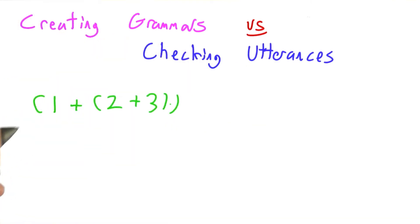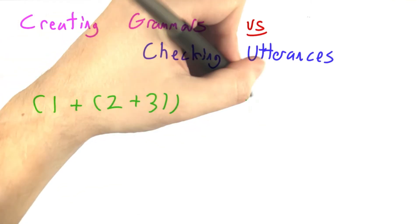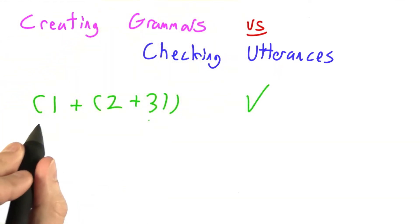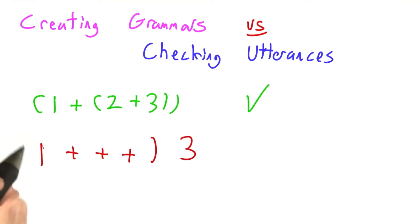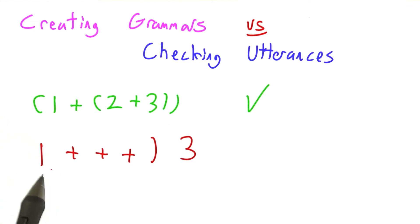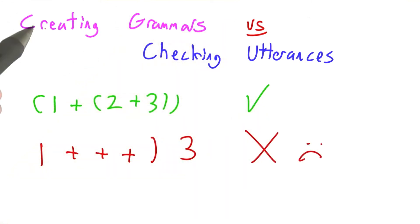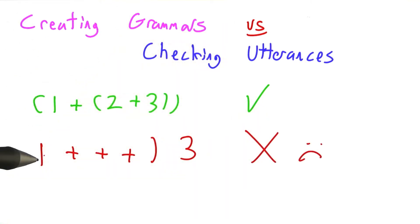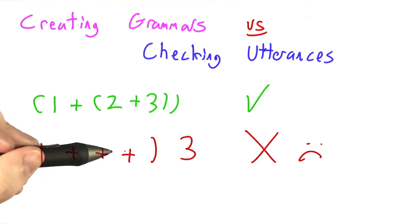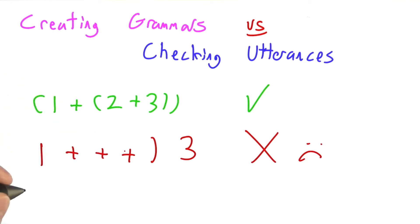For example, we really want to accept expressions like 1 plus 2 plus 3, but we really want to reject random sequences of tokens like 1 plus plus plus close parenthesis 3. This makes us super sad. It's not immediately clear how you check to see if an utterance is in a grammar — we can do it in our heads, but how would we write a computer program to do it?